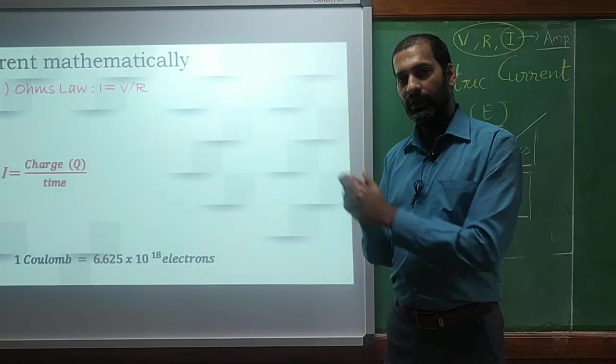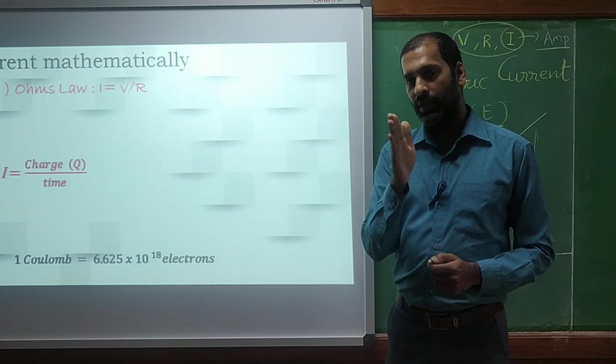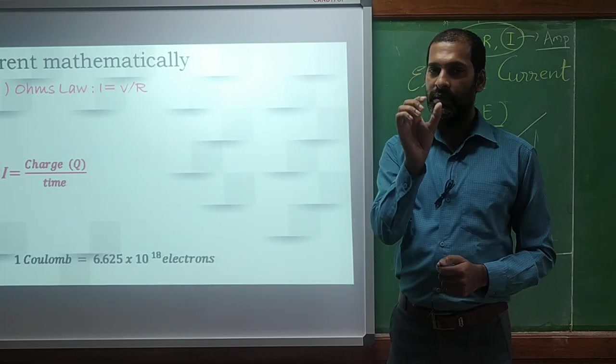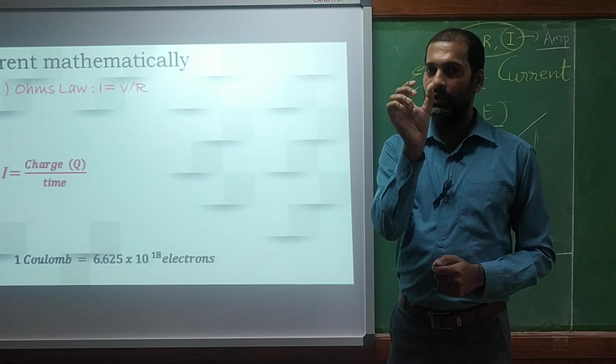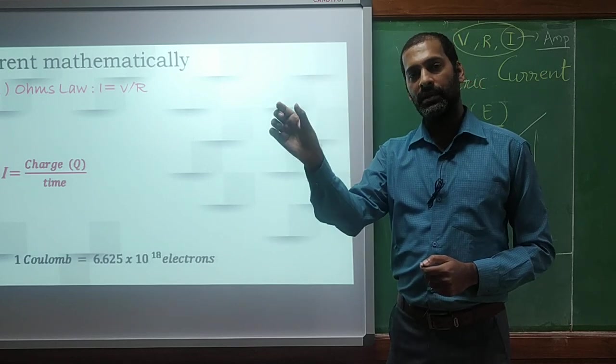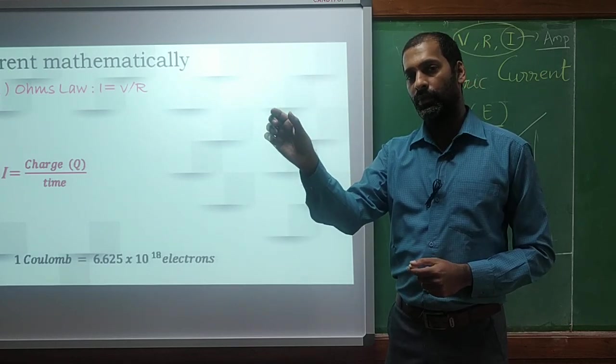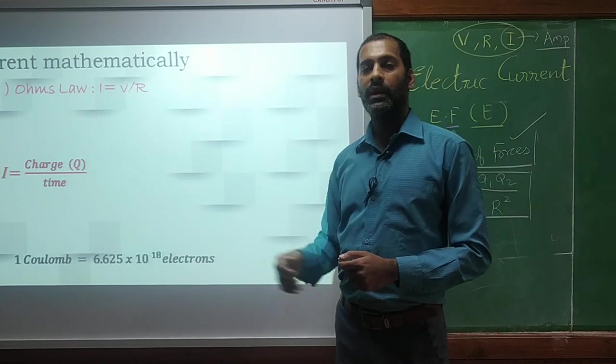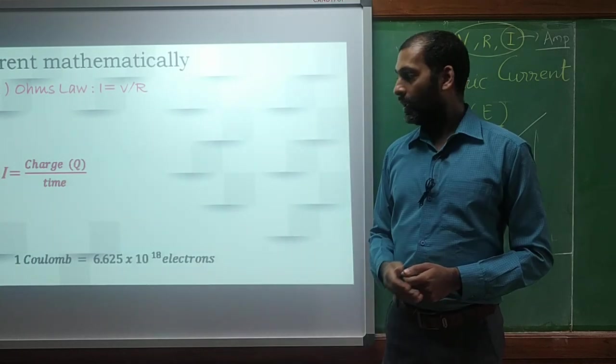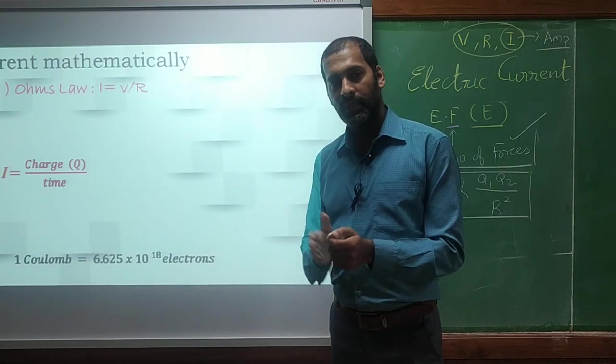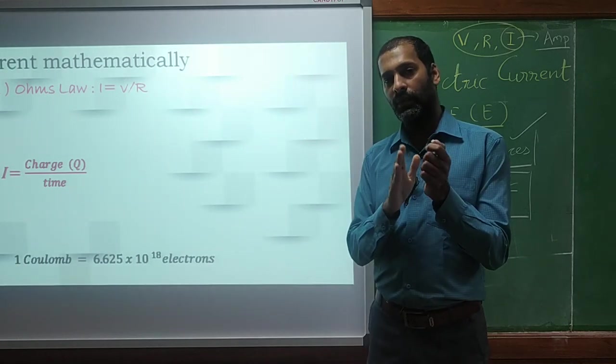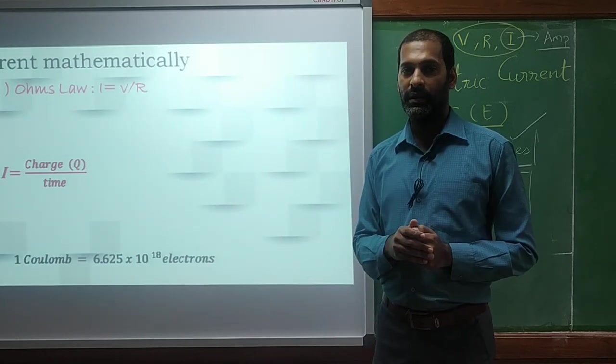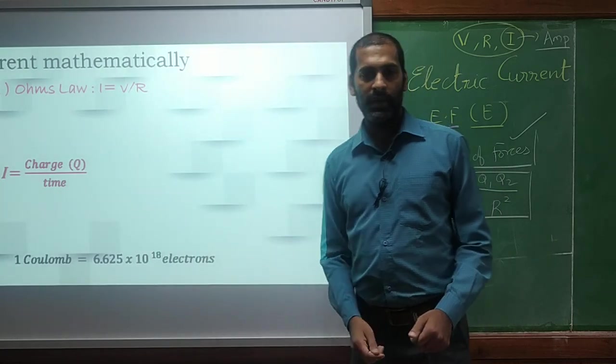We have seen in the previous slide that charges are moving with time. Say when it is time 0, charge is at position 1. When time is 2, charges are at position 2, another position. And their position is continuously changing. So what is happening? As time is increasing, the current value at that particular position is decreasing.